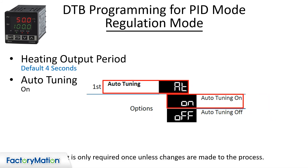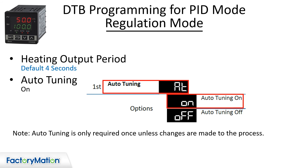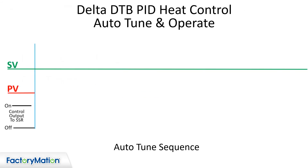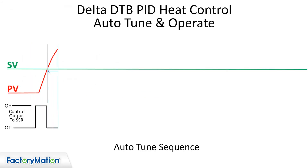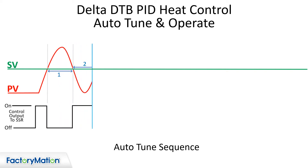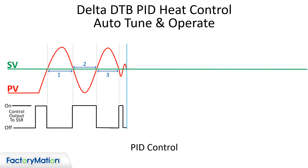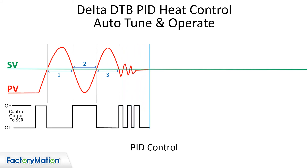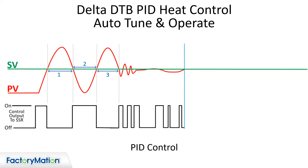The auto-tuning is set to on. When auto-tune is enabled, the DTB begins auto-tuning. When auto-tuning is complete, the controller goes into PID mode using the tuning parameters calculated.